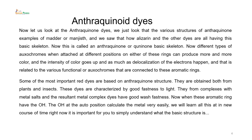Anthraquinoid dyes. Now let us look at anthraquinone dyes. We just looked at the various structures of anthraquinone — examples of madder or munjistha — and we saw how alizarin and other dyes all have this basic anthraquinone skeleton. This is called the anthraquinone or quinone basic skeleton. Different types of oxochromes when attached to different positions on either of these rings can produce more and more color.